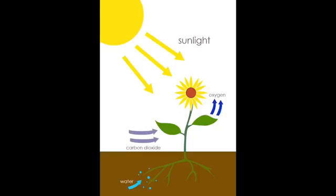Plants come in and they use photosynthesis. They use photosynthesis to make their own food, and oxygen is now a waste product of that process.